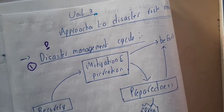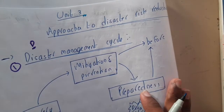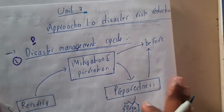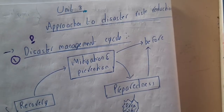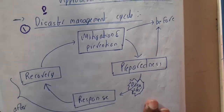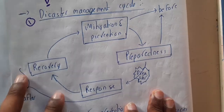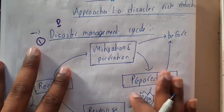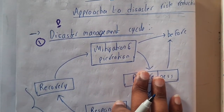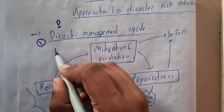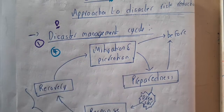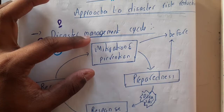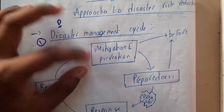We have already discussed this topic in multiple lectures, including in environmental studies. Now we'll be discussing it in more detail and in depth. The disaster management cycle has four different phases. The first phase is mitigation and prevention.